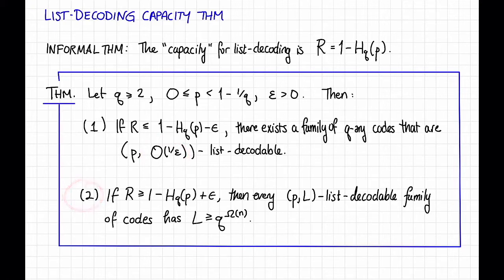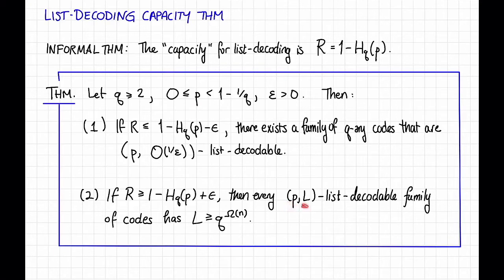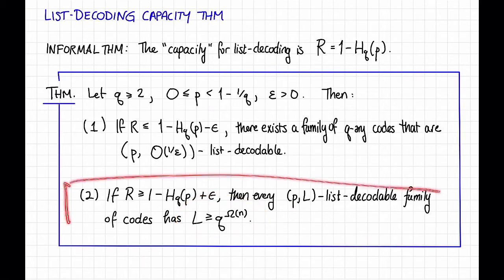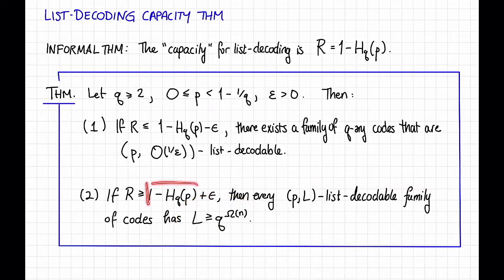On the other hand, thing 2: if the rate is a little bit bigger than that capacity — that is, 1 minus the q-ary entropy of p plus epsilon — then any list decodable family with radius p and list size L has to have L exponentially large, at least q to the omega of n. So the second thing is saying that if the rate is too big, just a little bit bigger than the capacity, then we cannot hope to have any decent guarantee on list decodability. We're always going to have an exponential number of codewords in any Hamming ball of radius p·n.